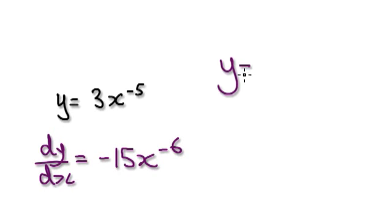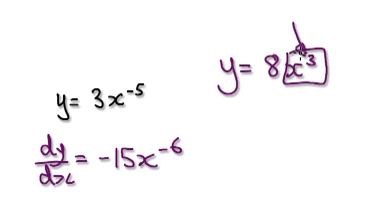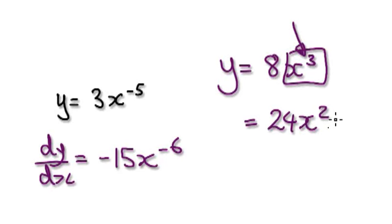So just remember, if you get given something like a constant — let's say 8 — and then something like x to the power of 3, just concentrate on differentiating x to the power of 3, and then this would give you 24x squared.